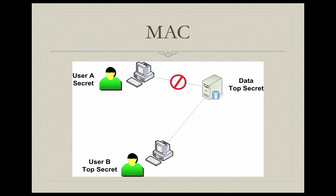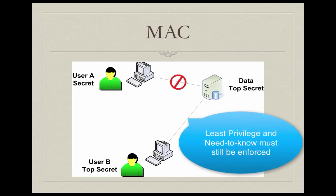In a MAC situation, the data is given a classification — in this case, top secret. User A has a classification of secret. User B has a classification of top secret. If user A tries to access the top secret data, he or she will be blocked because the system looks at their respective classifications and sees they don't match. User B has a top secret classification, and if user B has a need to know, then he or she can access the top secret data because the classifications match.